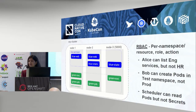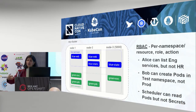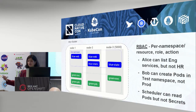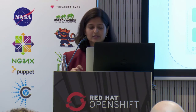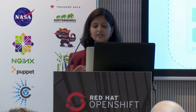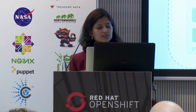With this level of granularity, there's a huge world of permutations. Bob has more admin-type rights — he can create pods in one namespace but not the other. The scheduler is actually a system role, not a person, and this role can read pods but not secrets. Now, let's get into the demo.